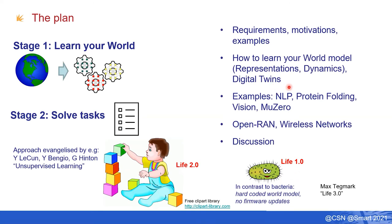Here are the stages of the talk. I'll start with requirements, motivations, and examples, then progressively introduce the machinery we need: representations and dynamics. In the third part I'll show recent examples from different domains where this approach has been successful. Towards the end I'll provide arguments for why we could apply the same to wireless systems and open networks, and I hope to have an open-ended discussion.